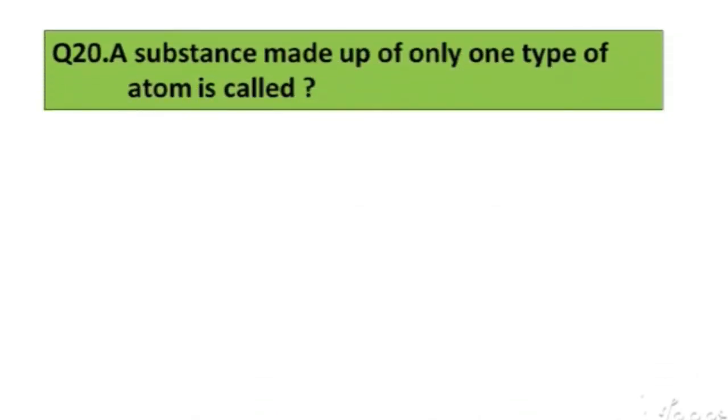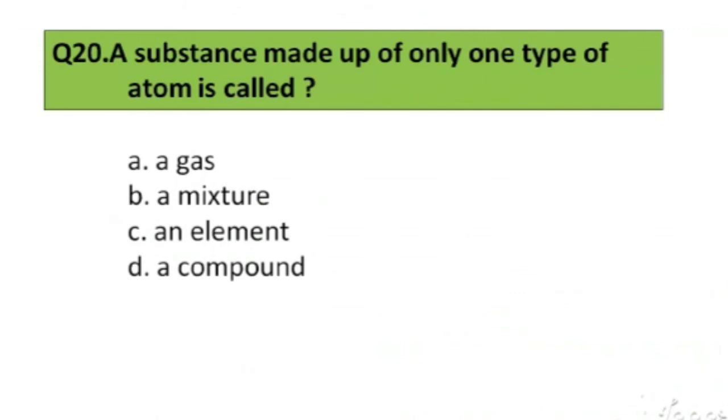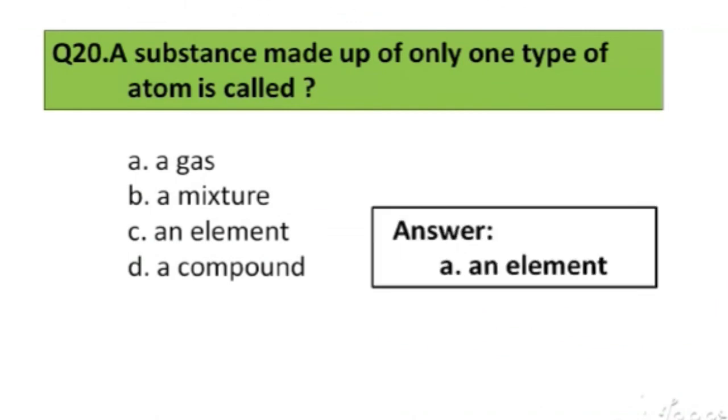Question number 20. A substance made up of only one type of atom is called: A. Gas, B. A mixture, C. An element, D. A compound. The right answer is option C, An element.